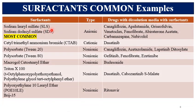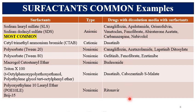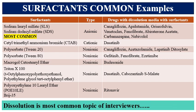Common examples of surfactants used in dissolution media include sodium lauryl sulfate, which is anionic; CTAB; Tween 20; Tween 80; and many more. Based on these examples, their type and a list of APIs for which they are used in dissolution media are provided.